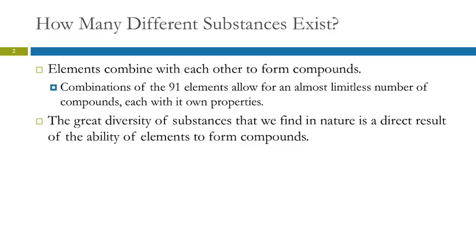There are 91 naturally occurring elements, and those elements can combine in different combinations to form compounds. You could have one atom each of two different elements, or you could have two to one or three to one, and that's just between two elements.